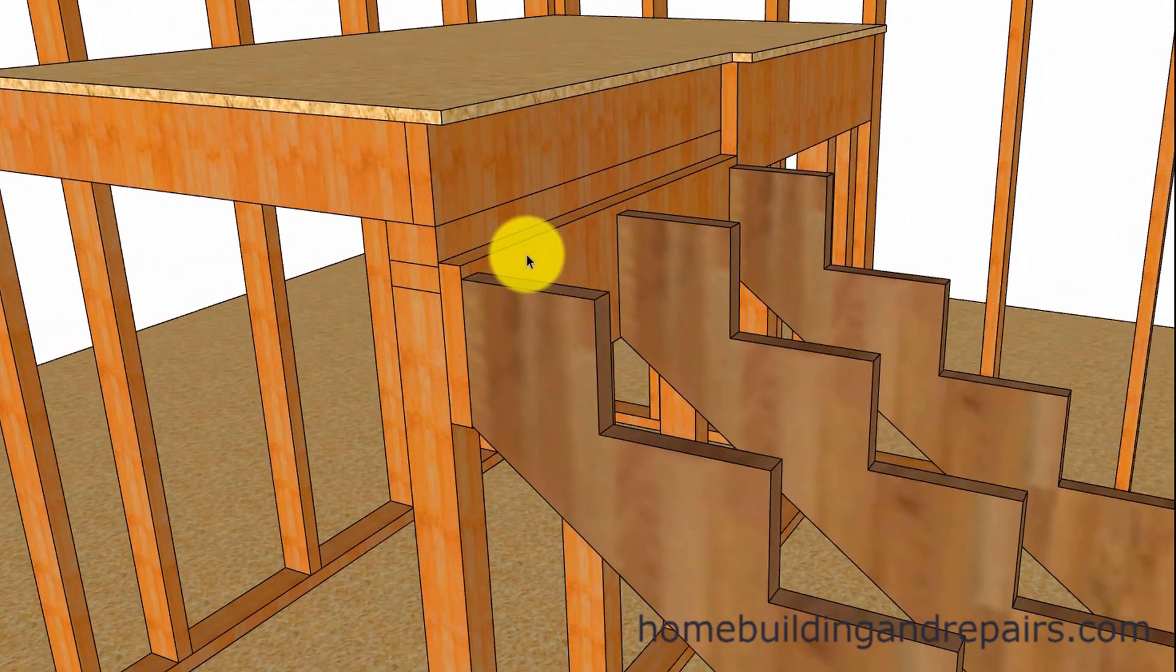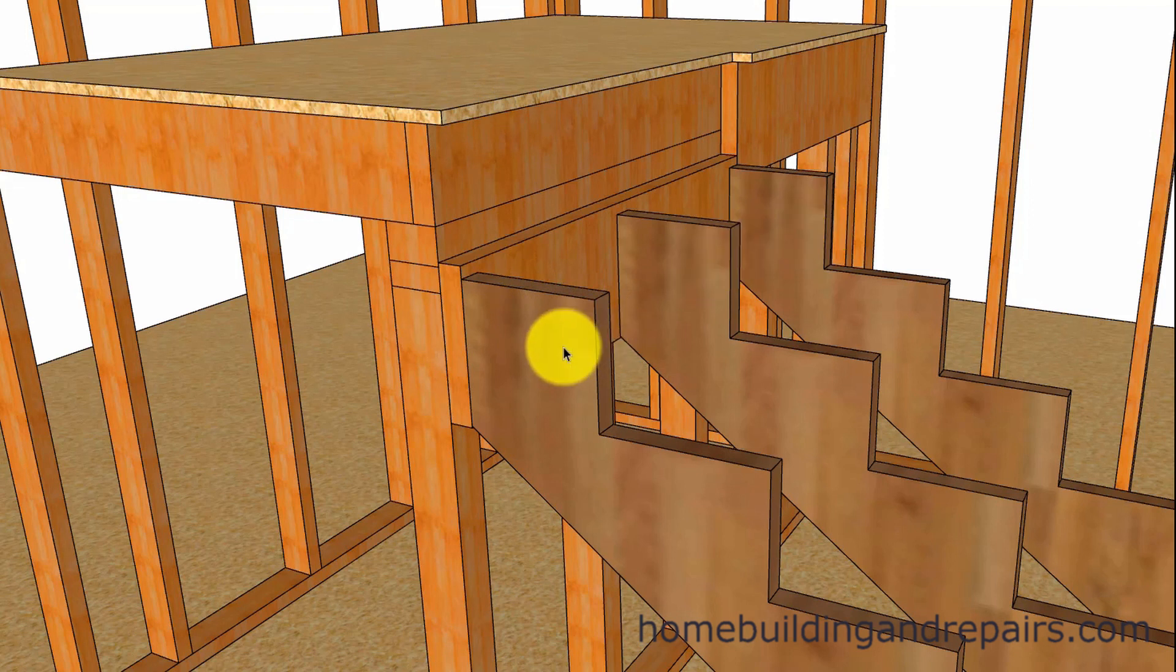So I went ahead and raised the ledger just to give you an idea. We're three quarters of an inch off, the thickness of the floor sheathing. So these stair stringers, this is the position they would need to be in if they were positioned correctly. But you can see where we have a problem here.